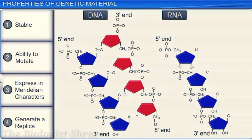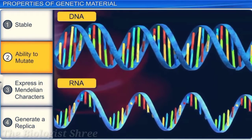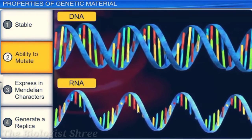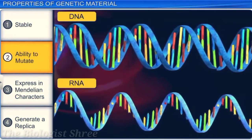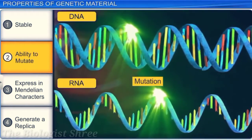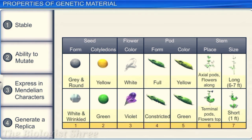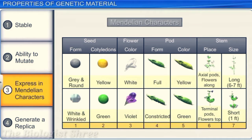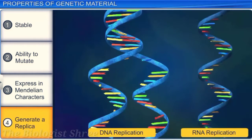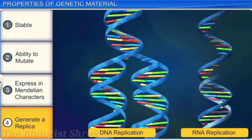It should be structurally and chemically stable, which means it should not change with age, change in physiology, or life cycle. Yet, despite stability, the molecule should provide scope for slow changes or mutation, that is necessary for evolution. Further, the molecule should be able to express itself in Mendelian characters, and also be able to generate its own replica, to become a genetic material.